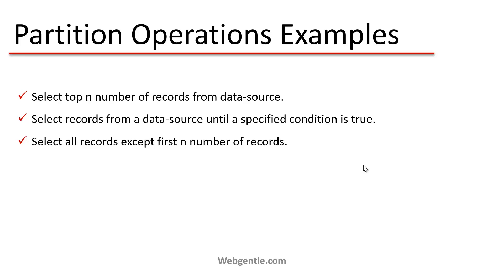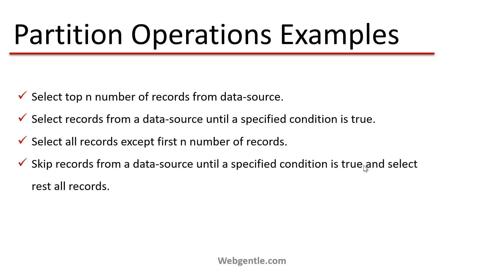Next is selecting all records except the first N number of records. Suppose you have a data source with N records and you need all records except the first seven — after the first seven records you need all the remaining ones, and in that scenario we can use partitioning. Similarly, you can skip records from a data source until a specified condition is true and select all the rest — skipping all records until the condition is true and then returning the remaining records.